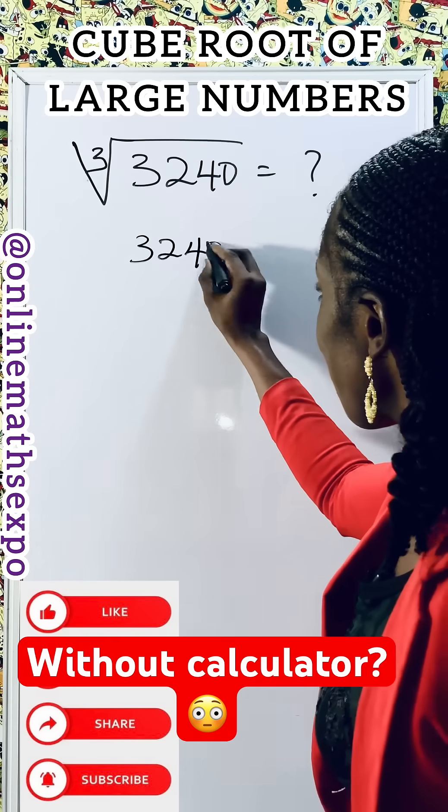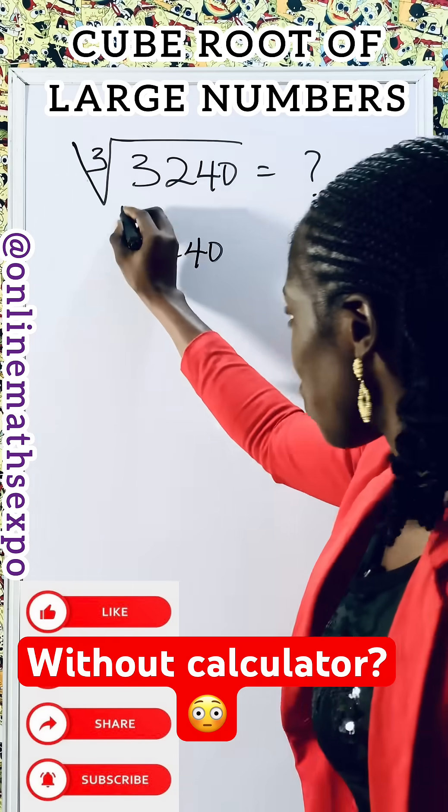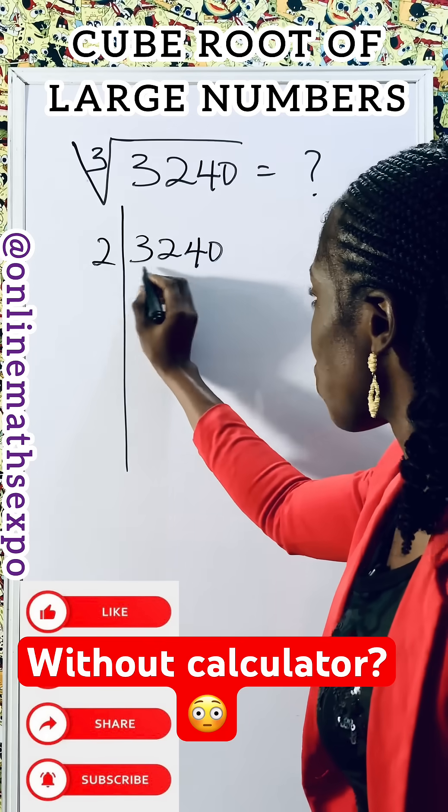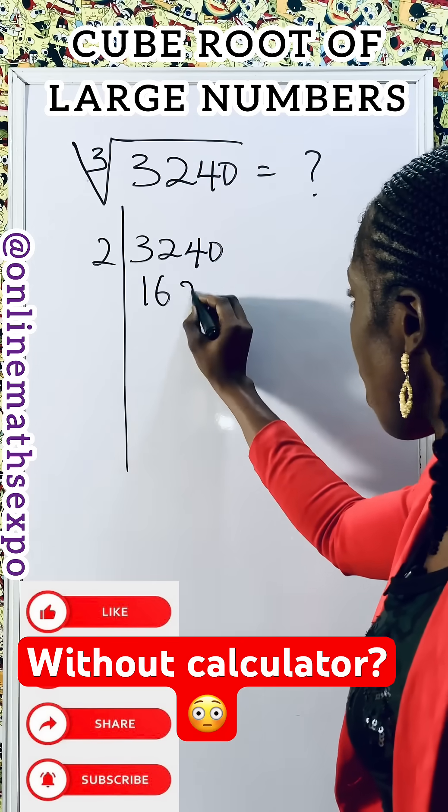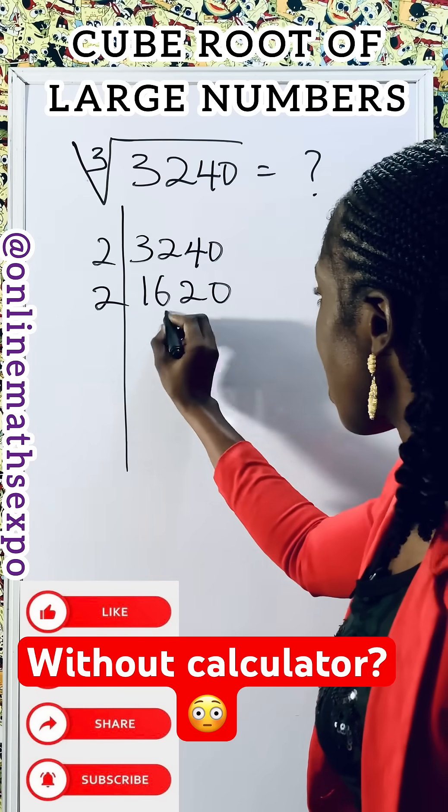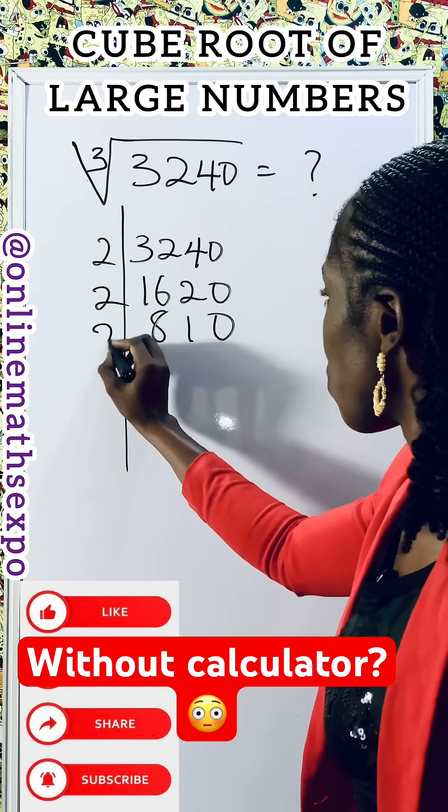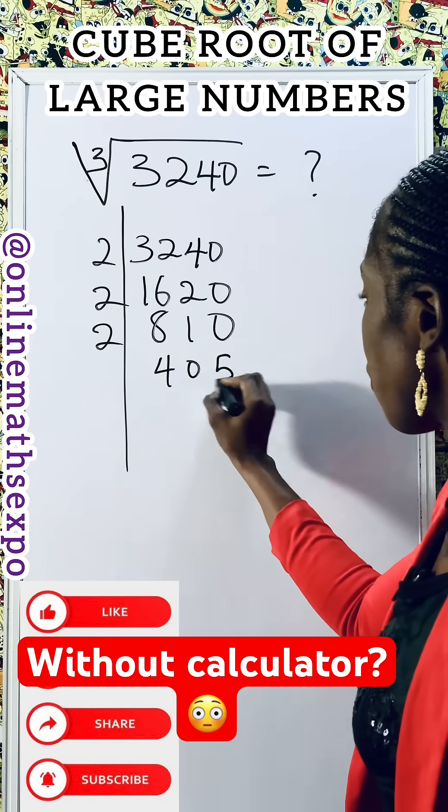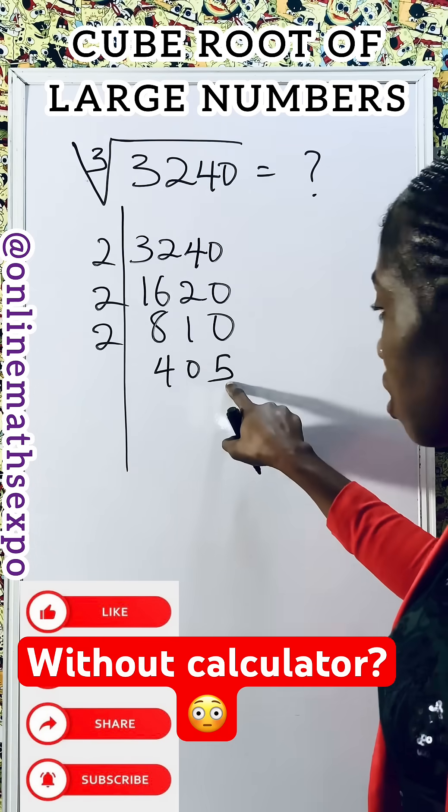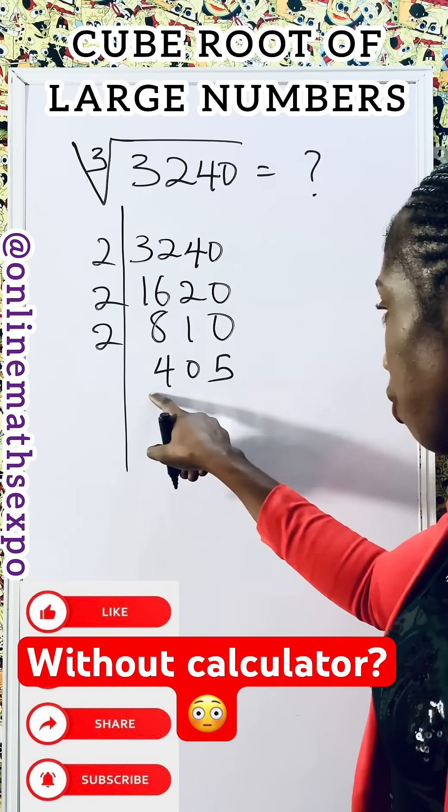We have 3240. The last digit is zero, so two can divide it. Two goes into 3240 giving 1620. Two goes into 1620 giving 810. Two goes into 810 giving 405. At this point, the last digit is five, so two cannot divide.